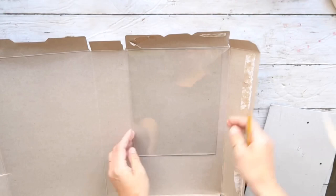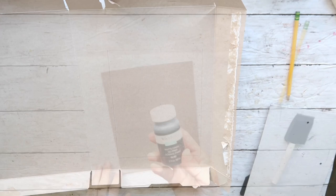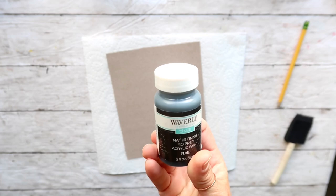After that I'm taking this Waverly chalk paint in a color ink and I will give this cardboard one full coat, then I'm going to leave it to dry.